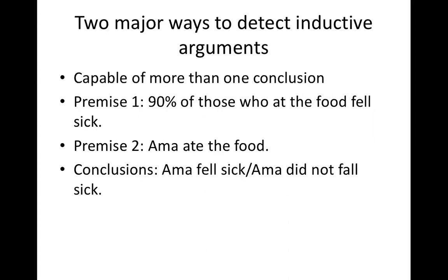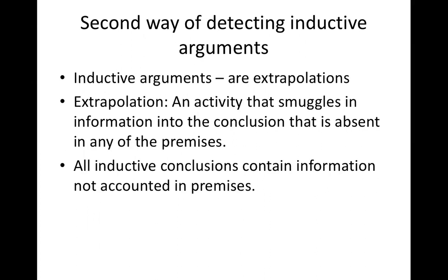Now let's look at two major ways to detect inductive arguments. First, they are capable of more than one conclusion. For example: 90% of those who eat the food fell sick; Ama ate the food. So there are two conclusions — Ama fell sick, and Ama did not fall sick — because Ama could be among the 90% who fell sick or among the 10% who didn't. Inductive arguments are always generating more than one conclusion.